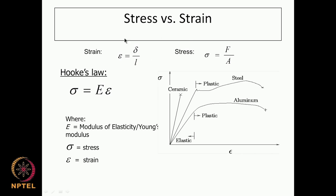Elongation (strain) will not have any units, whereas the stress will have units of force divided by area. We may have Newton divided by millimeter squared, meter squared, or centimeter squared. If you look at the graph that connects stress and strain — stress on the y-axis, strain on the x-axis.